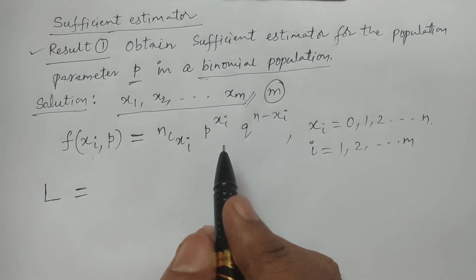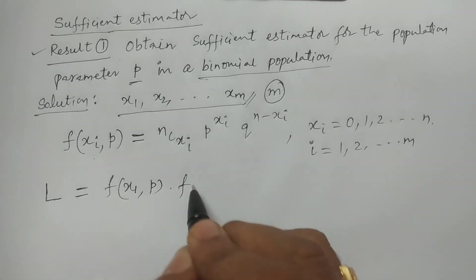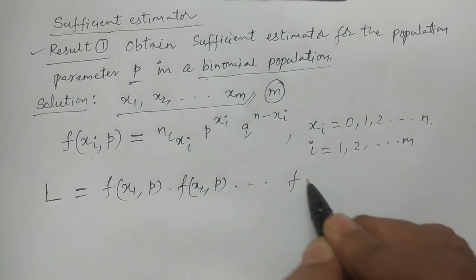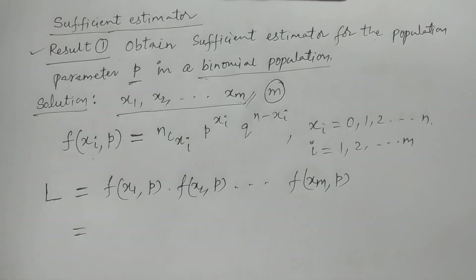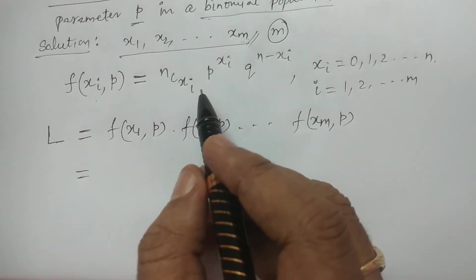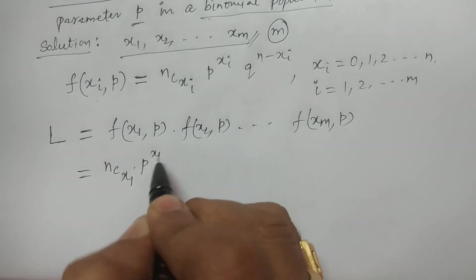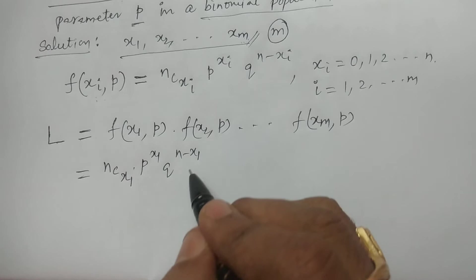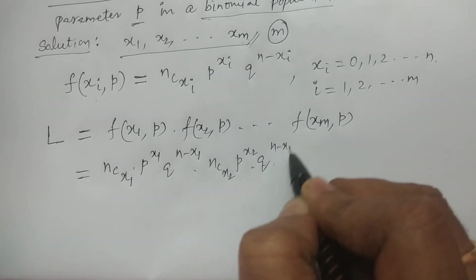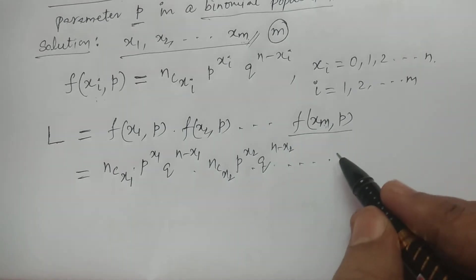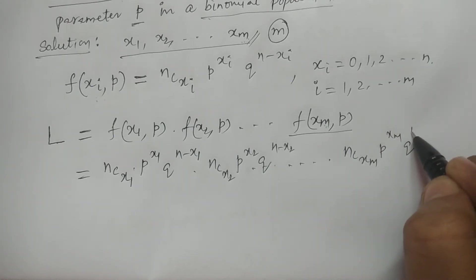Because the observations are independent, the likelihood function L equals f(x1, p) * f(x2, p) * ... * f(xm, p). Substituting the binomial density: L = nCx1 * p^x1 * q^(n-x1) * ... * nCxm * p^xm * q^(n-xm).